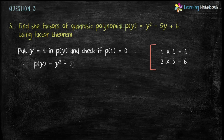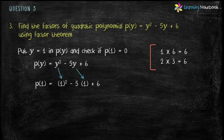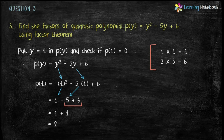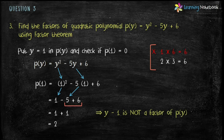First, put y equals 1 in P(y) and check if P(1) equals 0. P(1) equals 1² minus 5 into 1 plus 6, which equals 1 minus 5 plus 6. Solve it and we get P(1) equals 2. So the value of the polynomial is not 0 at y equals 1. Therefore, y minus 1 is not a factor of P(y). Note that we have also ruled out the value 6, meaning y minus 6 is also not a factor of P(y), because if y minus 1 is not a factor, then y minus 6 cannot be either.